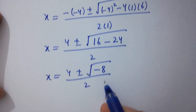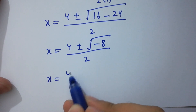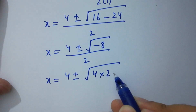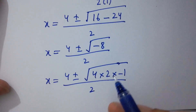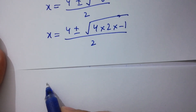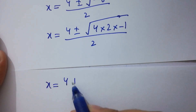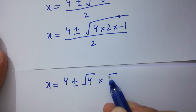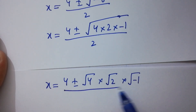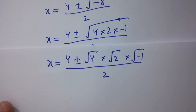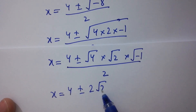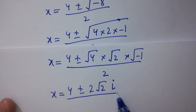We can write minus 8 as 4 times 2 times minus 1. So x equals 4 plus or minus square root of 4 times square root of 2 times square root of minus 1, all over 2. Since square root of 4 is 2 and square root of minus 1 is i from complex numbers, we have x equals 4 plus or minus 2 times square root of 2 times i, over 2.